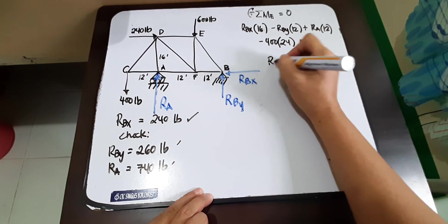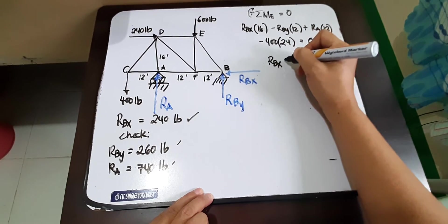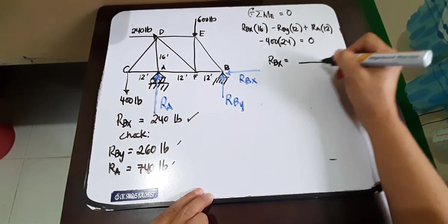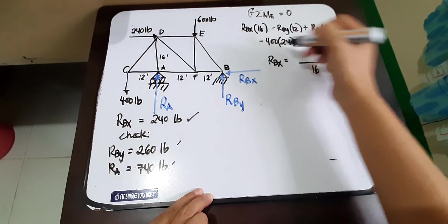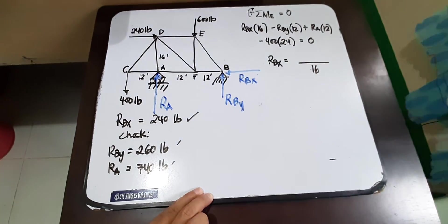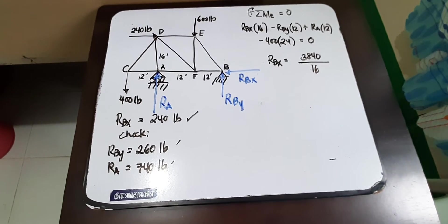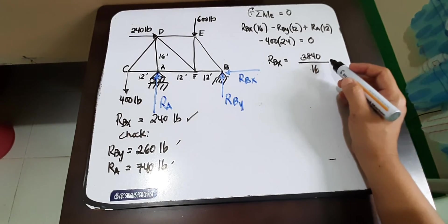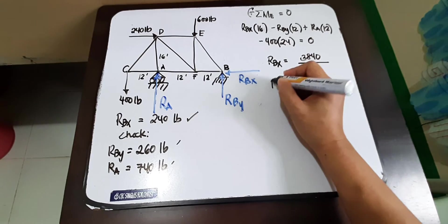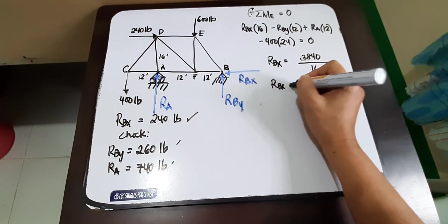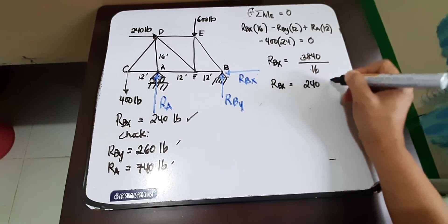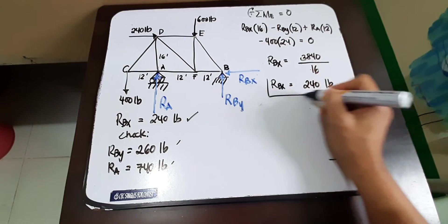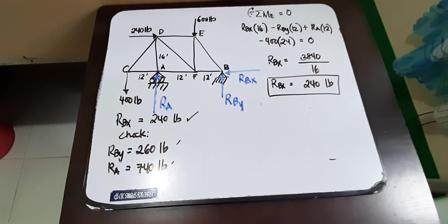So we have RBX is equal to over 16. This value is transposed to the right. Okay, so we have 3,840 divided by 16, and the answer would be equal to 240 pounds.